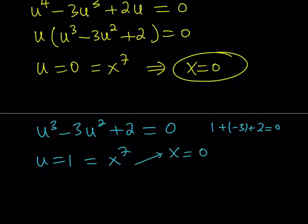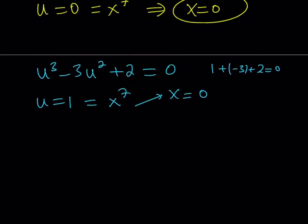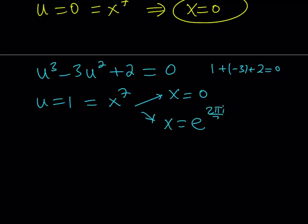Let's also talk about some complex solutions. For example, x to the 7th power equals 1. In the real world it has one solution, but in the complex world it has 7 solutions because 1 has 7 complex roots. There are 7 seventh roots of 1, and one of them can be written as e to the power 2πi over 7. That's probably a better way to write it: 2πi over 7. This can also be written as cosine(2π/7) plus i times sine(2π/7).